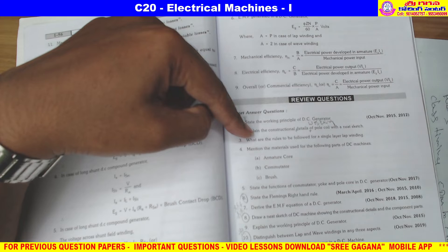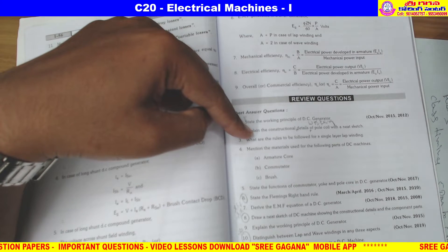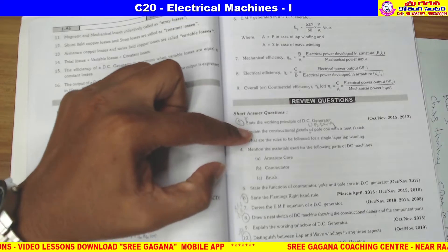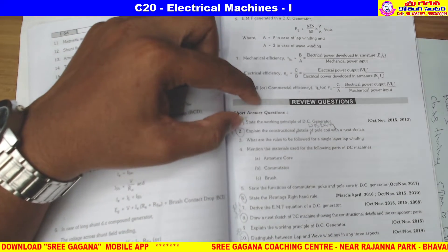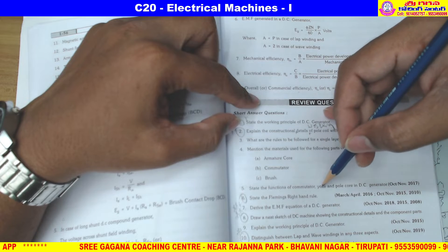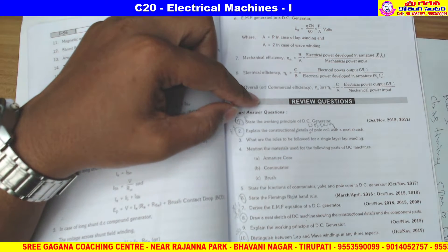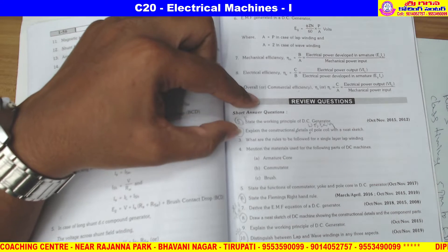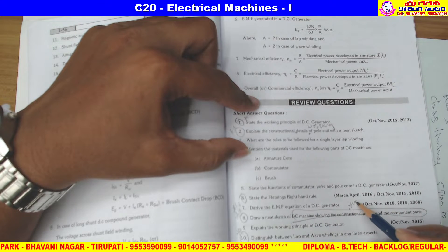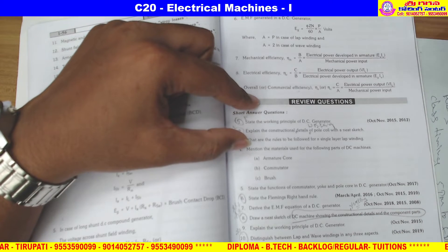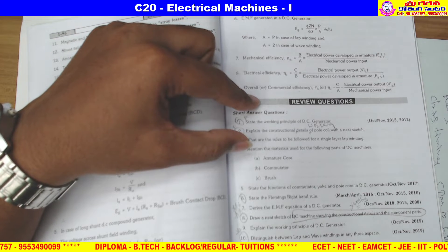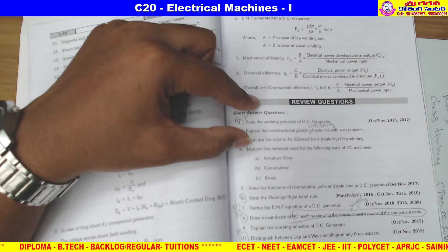This question covers the components of the constructional details — components like armature, commutator, commutator segments, brush, etc. If you get specific questions on armature core, commutator, brush, or pole, this one question on constructional details and working of DC machines covers them all — including working as a separate question.